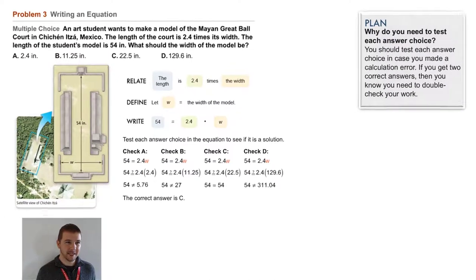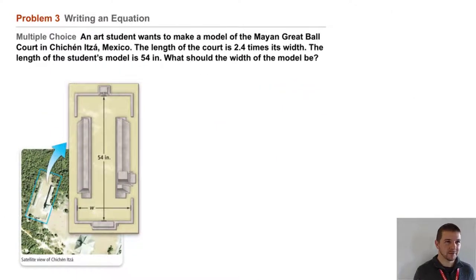Problem 3 is an example: writing an equation. This one's multiple choice. An art student wants to make a model of the Mayan Great Ball Court in Chichen Itza. The length of the court is 2.4 times its width. The length of the student's model is 54 inches. What should the width of the model be?